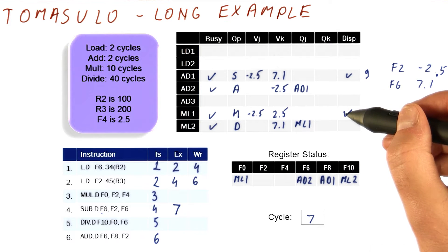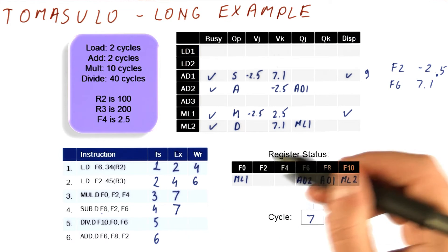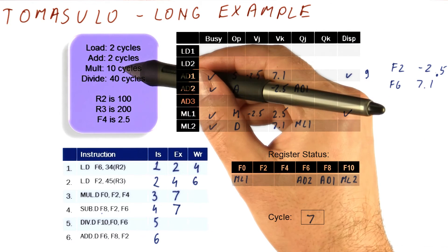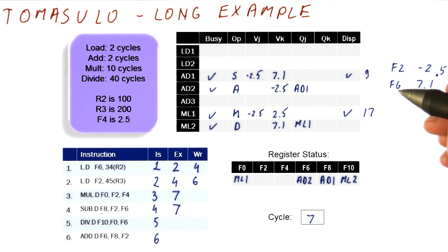The multiplication here, which is this instruction, also starts executing in cycle seven. It's going to take ten cycles. So in cycle 17, it's going to try to broadcast the result.